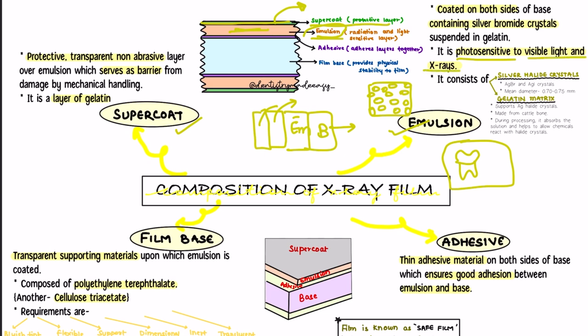The emulsion layer consists of silver halide crystals in a gelatin matrix. The silver halide crystals are nothing but silver bromide and silver iodide crystals. Silver bromide crystals are present at around 80 to 99 percent, and a very small amount of silver iodide crystals are present. The mean diameter of these crystals is 0.70 to 0.75 micrometers. The presence of silver iodide crystals adds greatly to the sensitivity of the film emulsion.